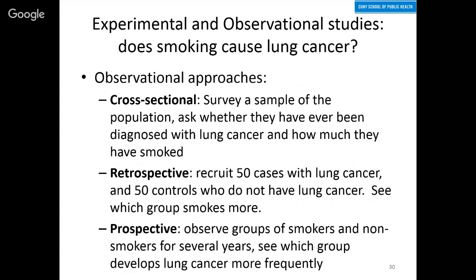Looking at alternative observational approaches in that same example: the cross-sectional approach would be to take a sample of the population — as has been done every year in the studies I mentioned — ask whether those individuals have been diagnosed with lung cancer in the past number of years, and also ask about their smoking status and see if there's a correlation between them.